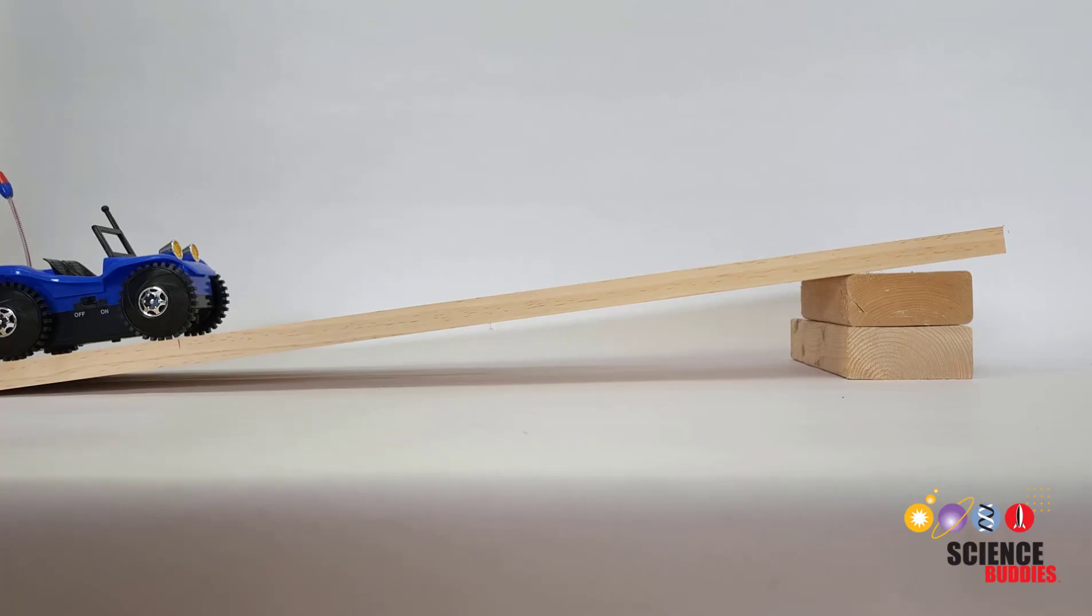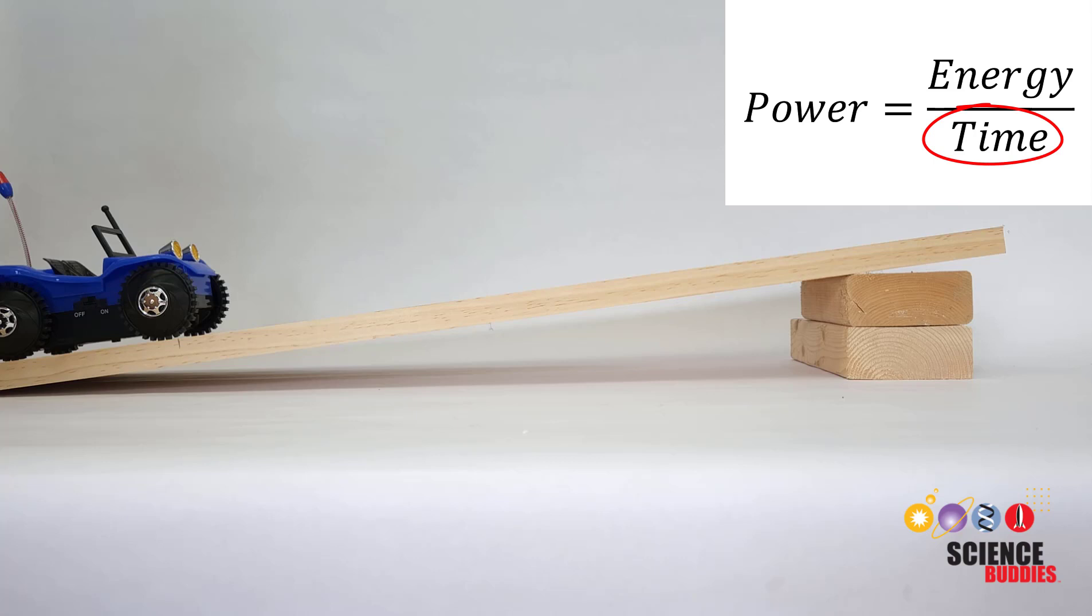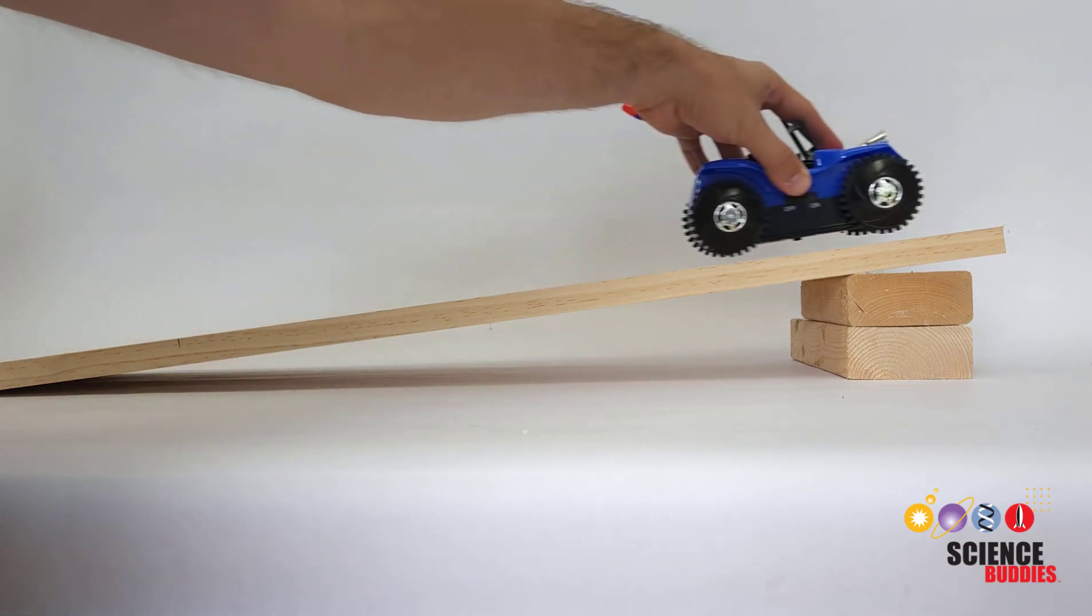Now it's time for some physics to calculate the power exerted by the car. Power is equal to change in energy or work divided by time. In other words, power is a measure of how fast you can do work. You just measured the time it took the car to drive up the ramp with a stopwatch, but what about the change in energy? We can find that from the car's change in gravitational potential energy.